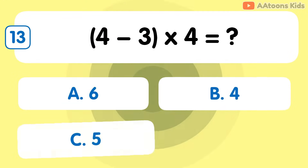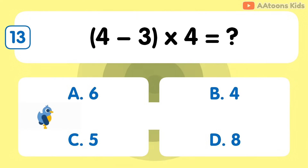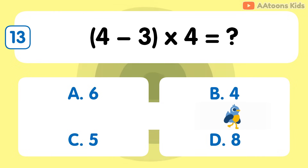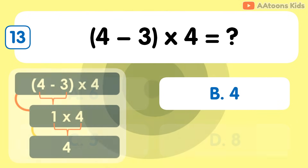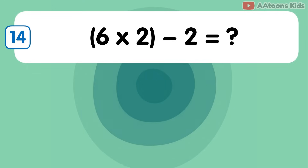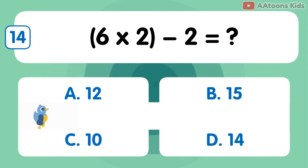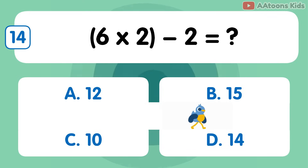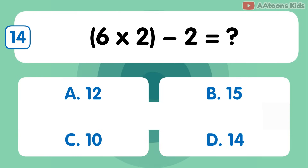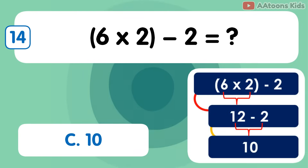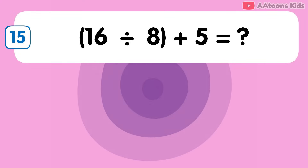28 minus 11 multiplied by 4 is 20. 29 minus 11 multiplied by 5 is 16. 16 divided by 8 plus 5 is 7.